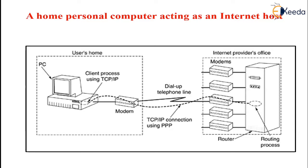A home PC calling an internet service provider is shown in the figure. The modem is shown external to the computer to emphasize its role, but modern computers have internal modems. For both the router-to-router leased line connection and the dial-up host-router connection, some point-to-point data link layer protocol is required on the line for framing, error control, and other data link layer functionality.